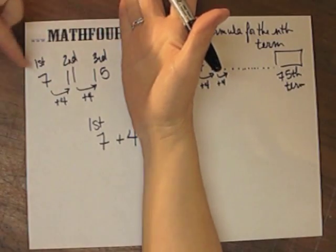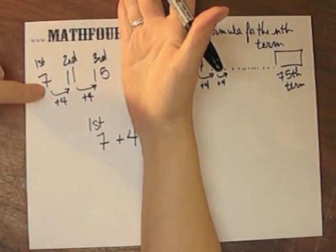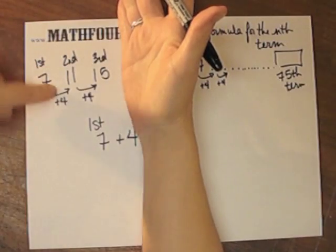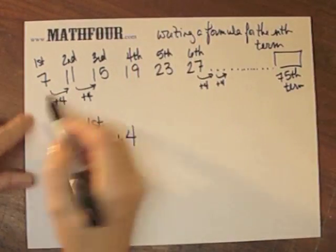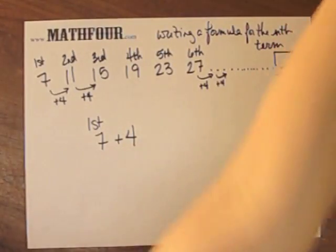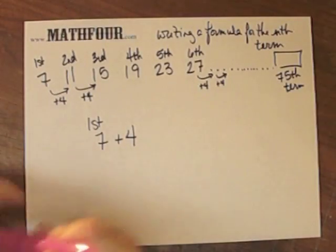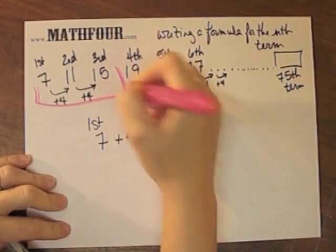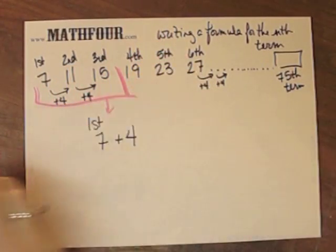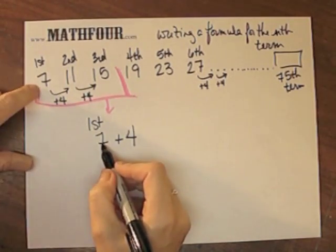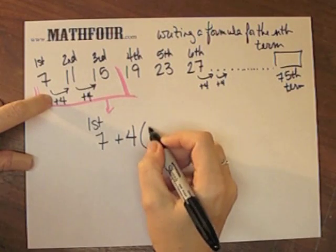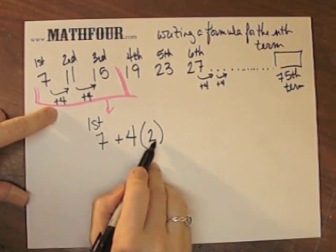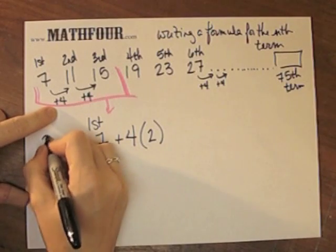If I suppose I wanted to do just this piece, I start with 7, and to get to term 3, I would say add 4 twice. So doing just this piece here, I do 7 plus 4 times 2, right? So these two 4s, this is 4 times 2, and this gives me the 3rd term.